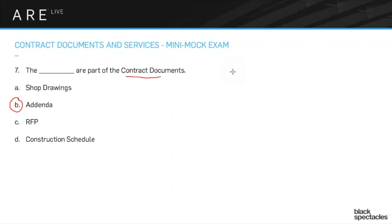So when do the addenda happen? You put together your set of drawings, you're getting ready to bid, and as you bid them out there's inevitably some confusion. A contractor calls and says there are two different things in two different locations. You take their question, compile a few of those questions, answer them in written form, and send it out to all the bidders — to make sure you get apples-to-apples bids. That document is called the addenda. You're altering the original contract documents, adding or updating detail, and once you produce an addendum it goes in and becomes part of the contract documents.